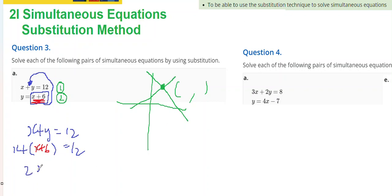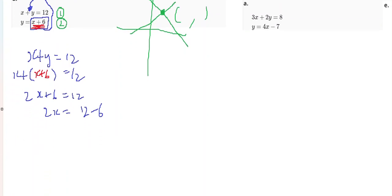And that gives me 2x plus 6 equals 12. 2x equals 12 minus 6. 2x equals 6. Divide both sides by 2. Therefore, x equals 6 on 2, and x equals 3.